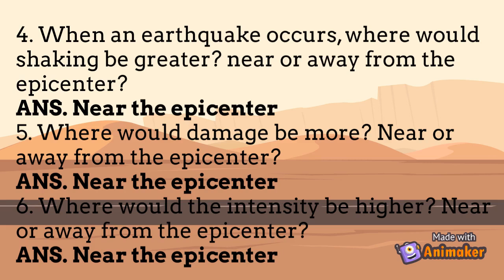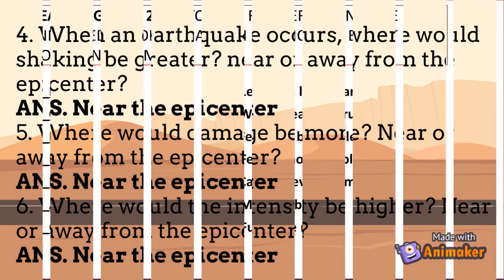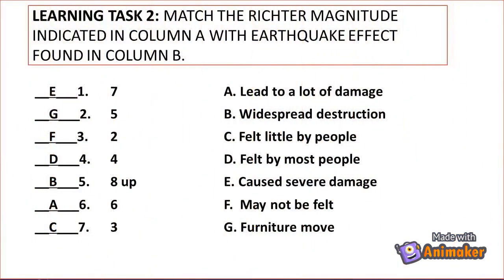Number 6: Where would the intensity be higher — near or away from the epicenter? Answer: Near the epicenter. Learning Task number 2: Match the Richter magnitude indicated in Column A with the earthquake effect found in Column B.